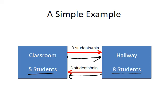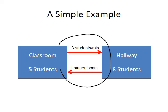Because the three students leaving each area are replaced by three different students coming in, the total number of students in the hallway remains constant. They may not be the same consistent students in each area, but the total number remains constant. This is what dynamic equilibrium is — two opposing processes that continue to occur, but because they occur at the same rate, the amounts remain steady state.